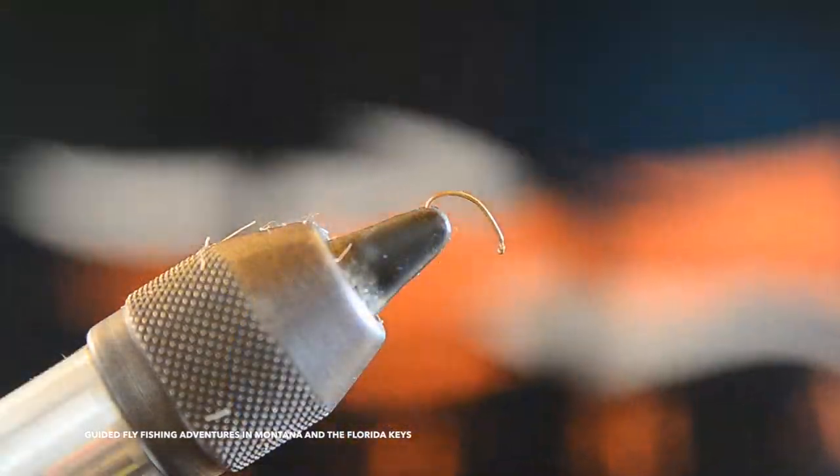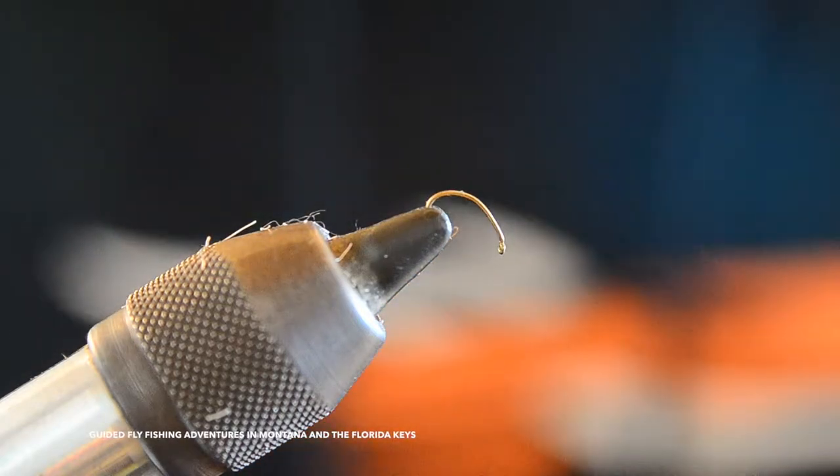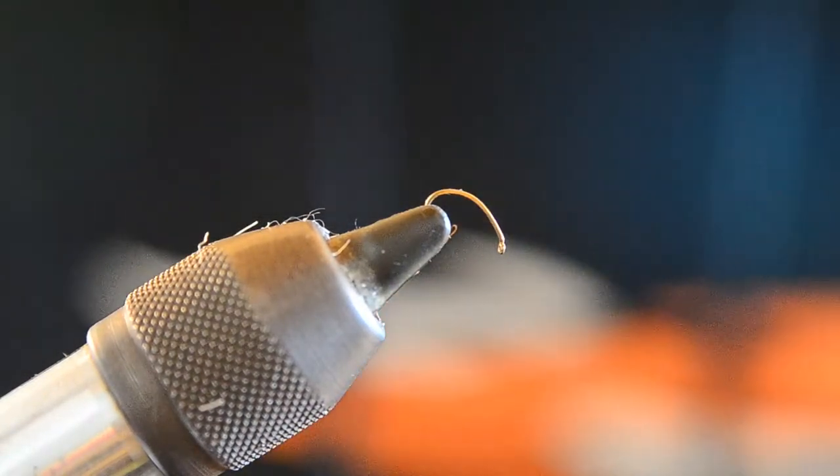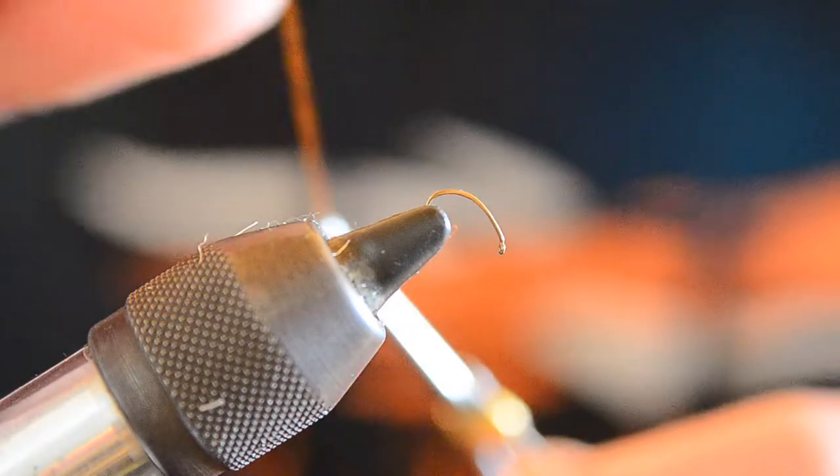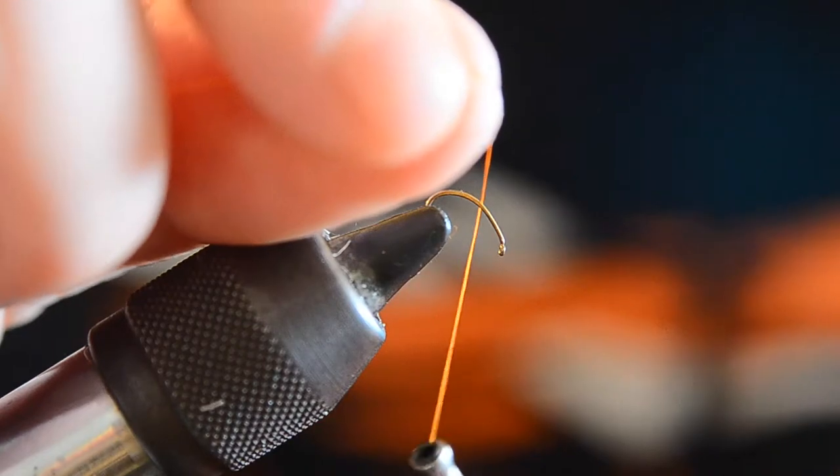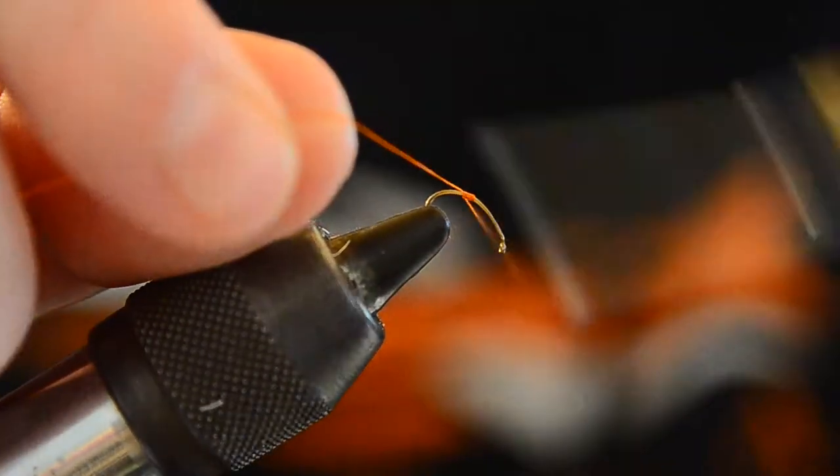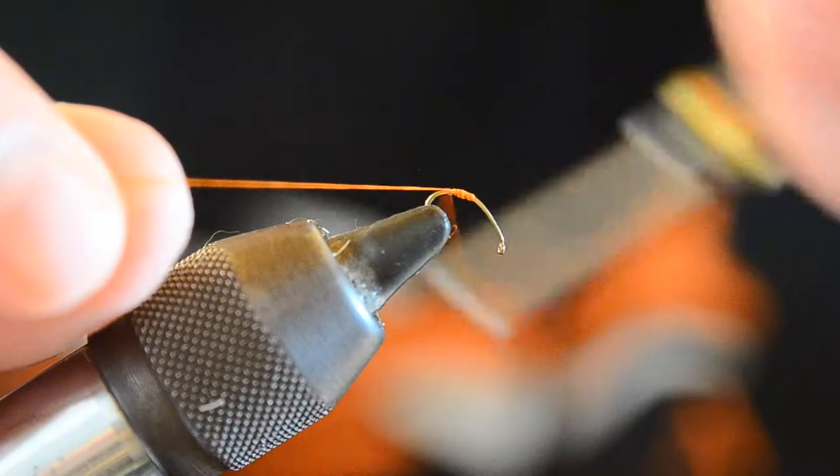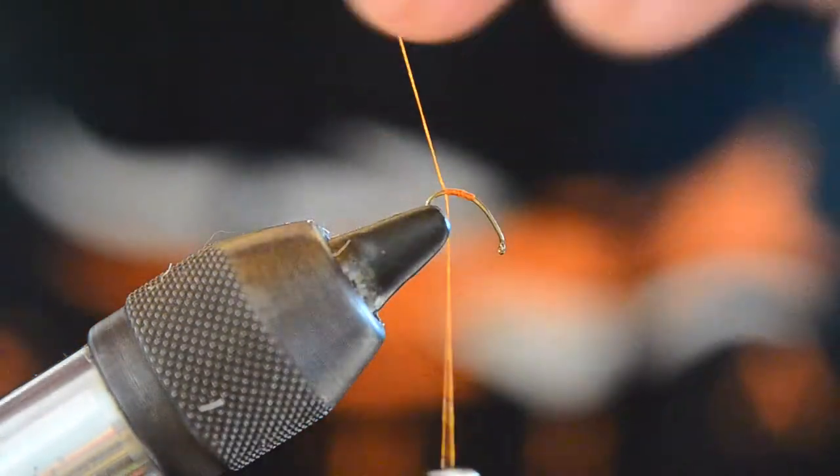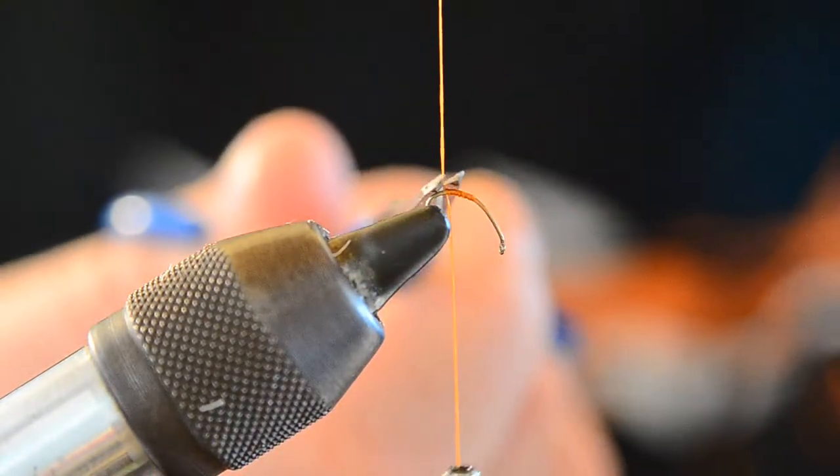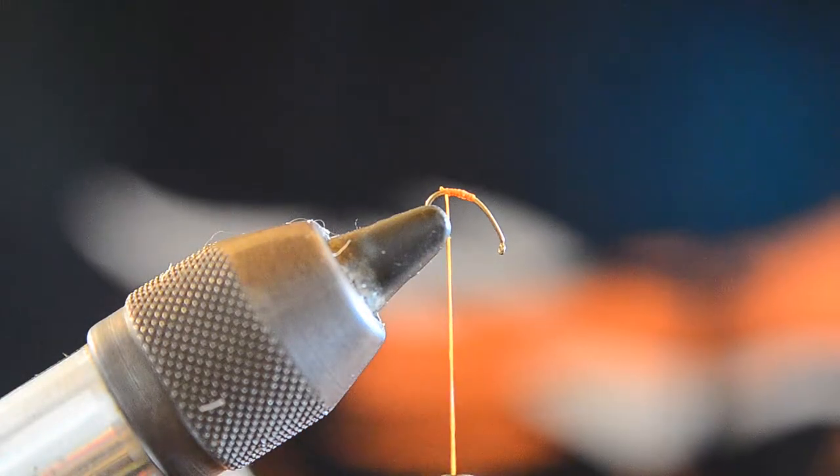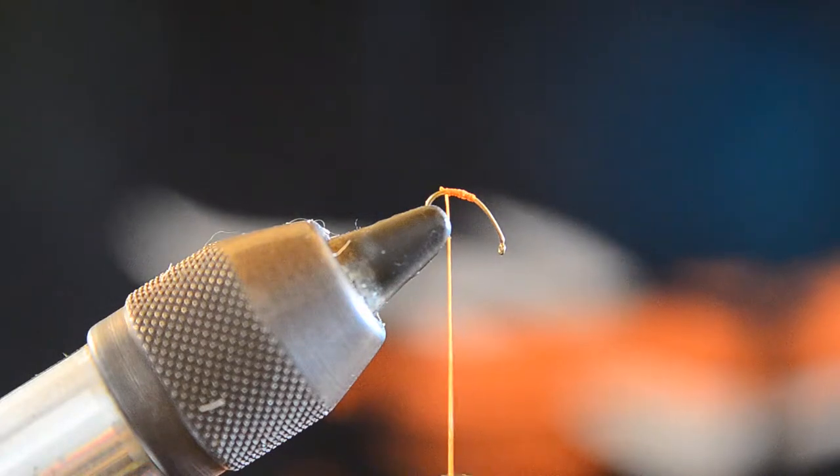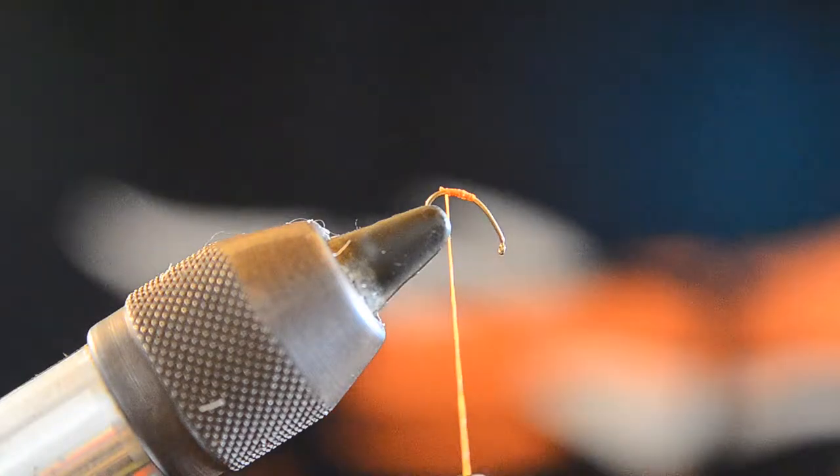Here we're going to tie a foam flying ant, and you can tie this fly in many different colors, but I choose to basically tie it in black or cinnamon. Start a little thread. It really doesn't matter what color you use because it's all going to be hidden anyway. I just happen to have this rusty orange on the bobbin.